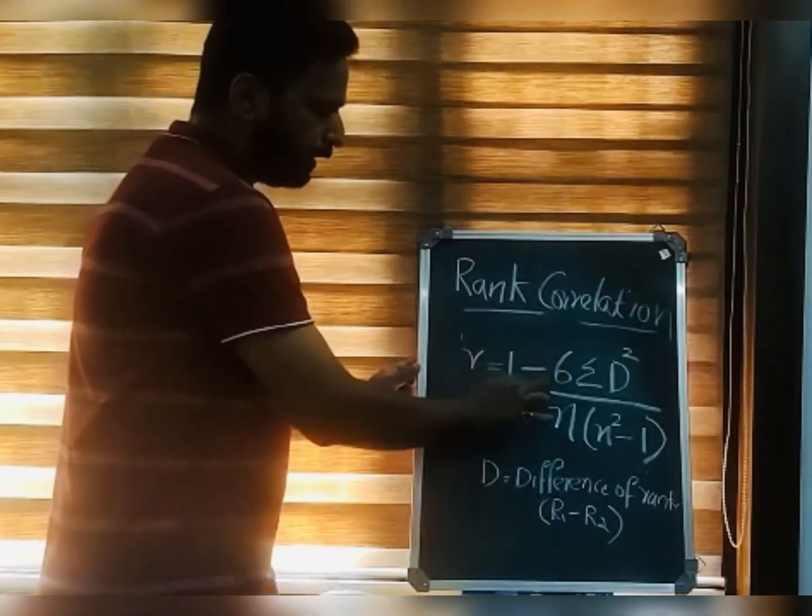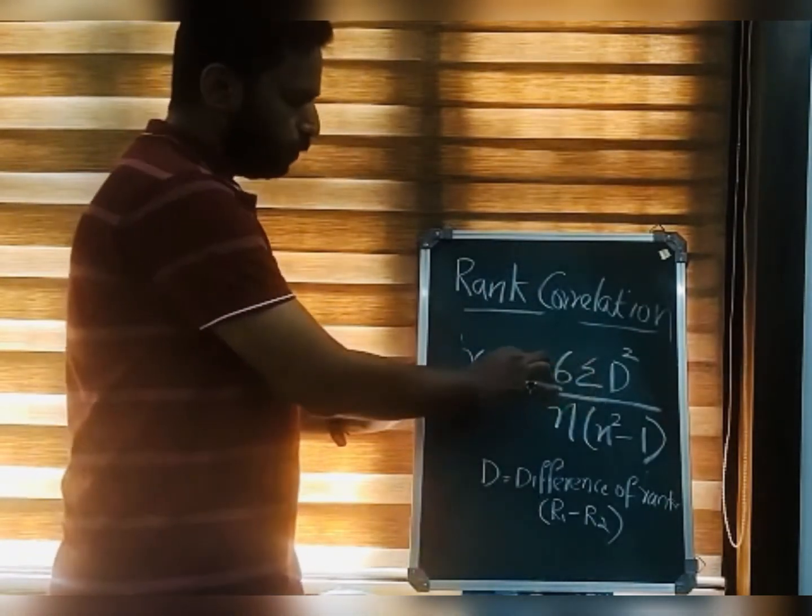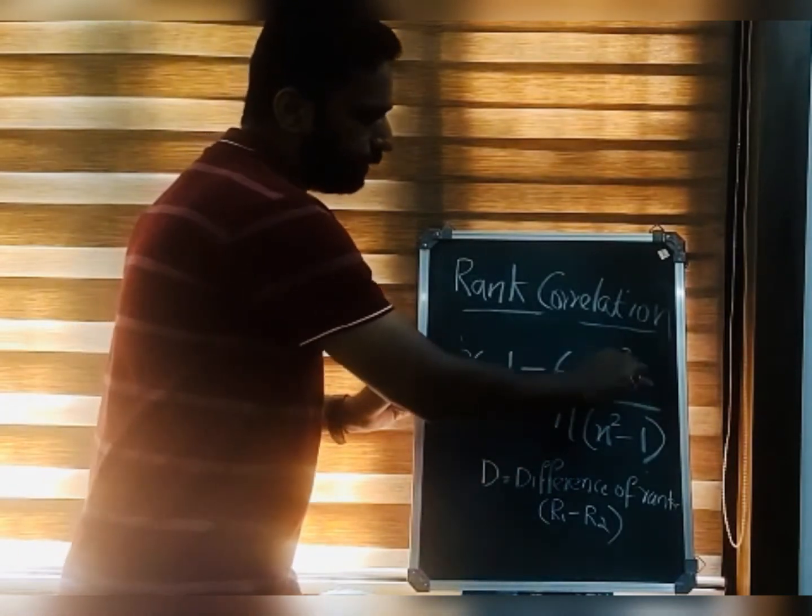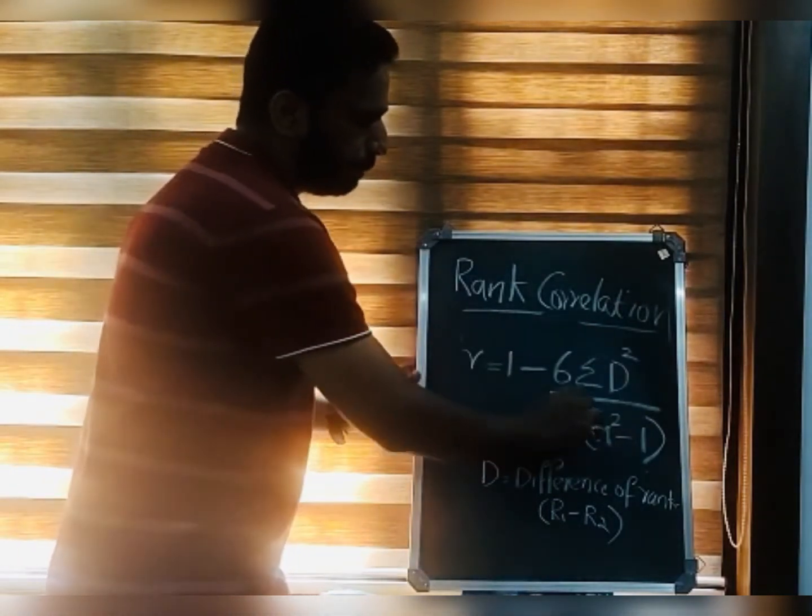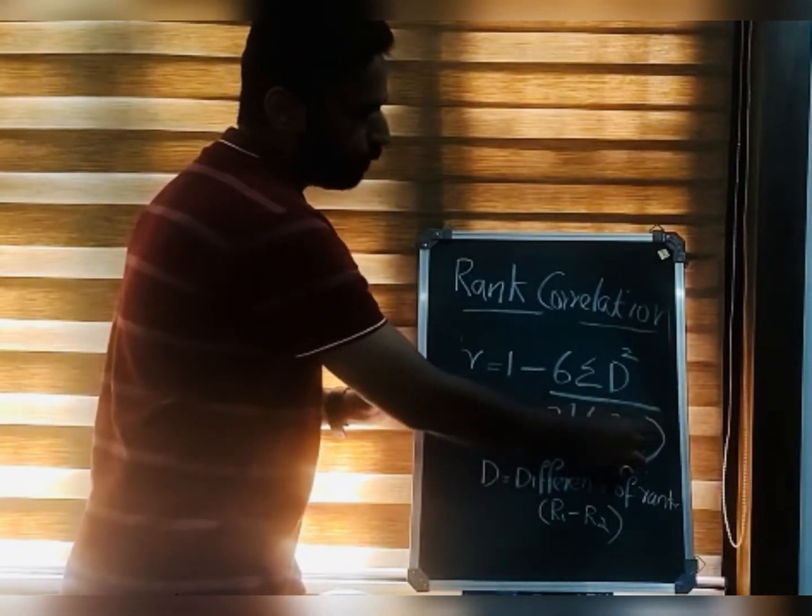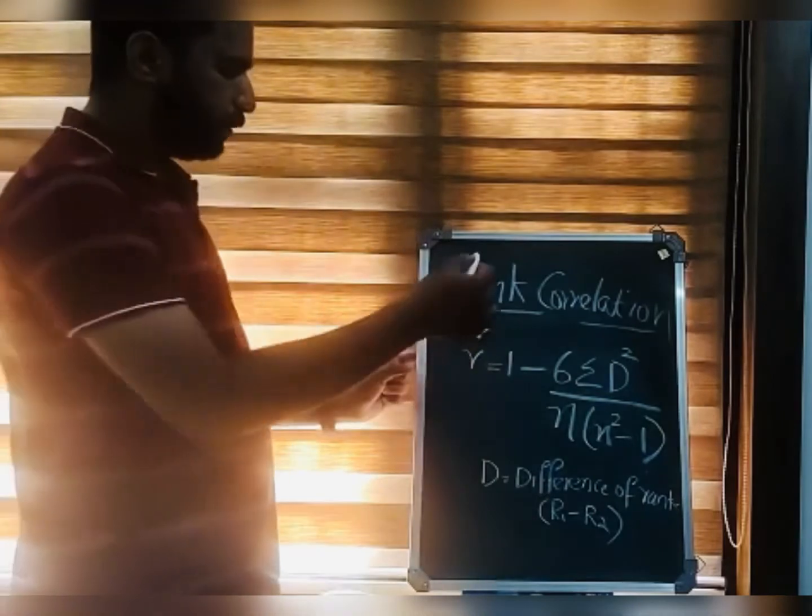The formula is r equals 1 minus 6 sigma D squared divided by n into n squared minus 1.